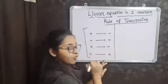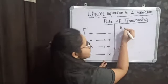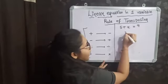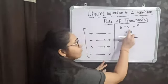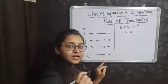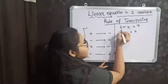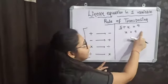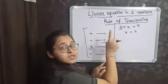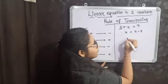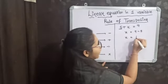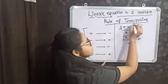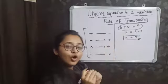We will understand with the help of examples. If I have an equation 5 plus x is equal to 9, and I have to find the value of x — finding the value of x means finding the solution. Here, 5 is of positive sign, and on the right-hand side, positive becomes negative. So it will be 9 minus 5, and x is equal to 4. So x equals 4 is your solution by the rule of transposing.